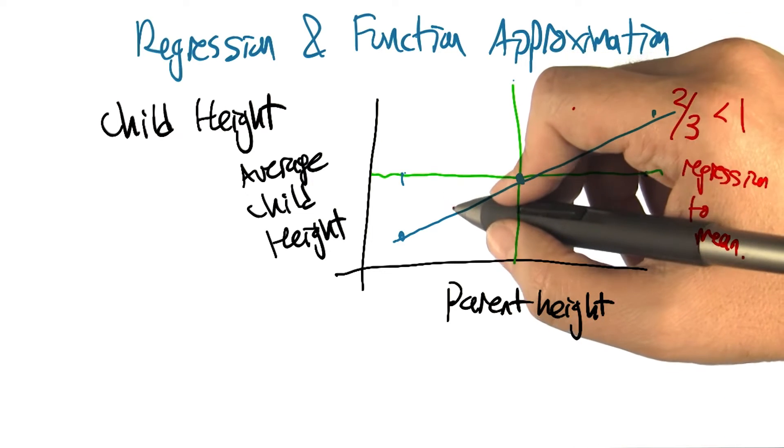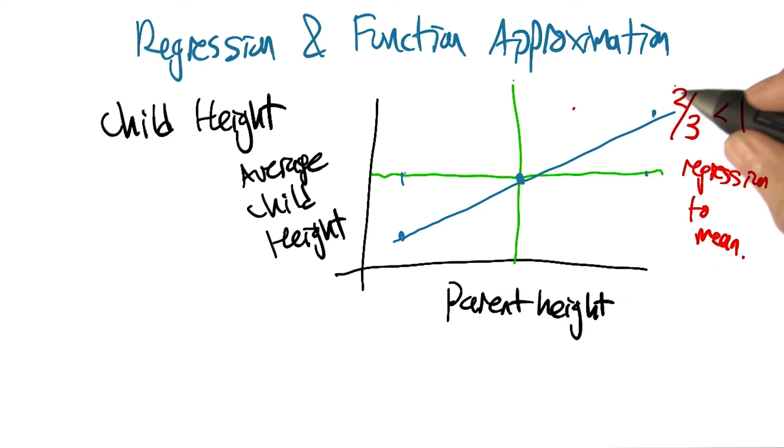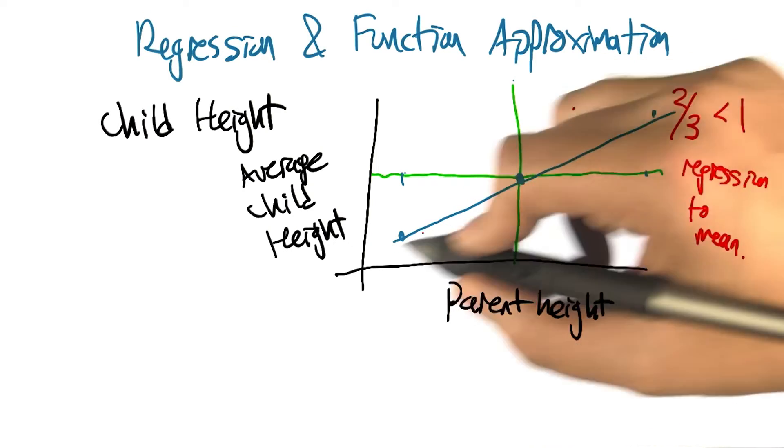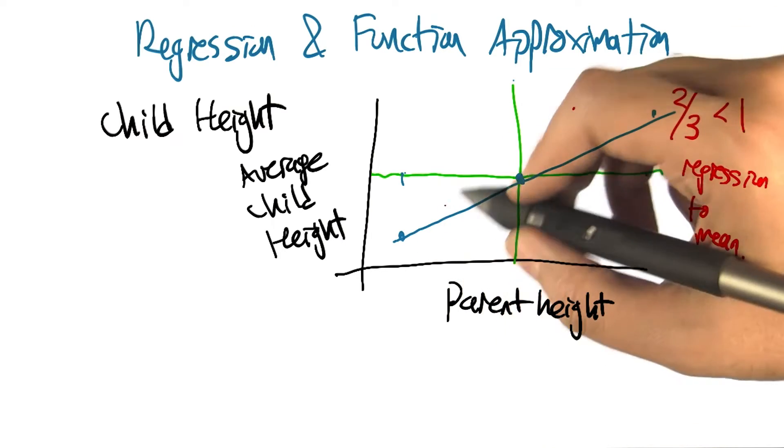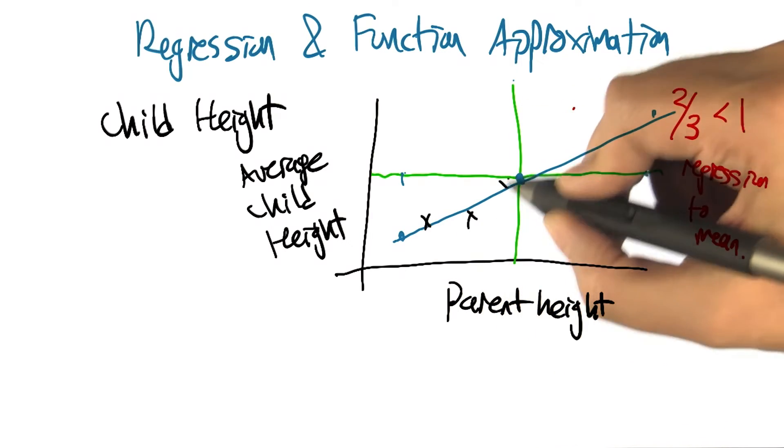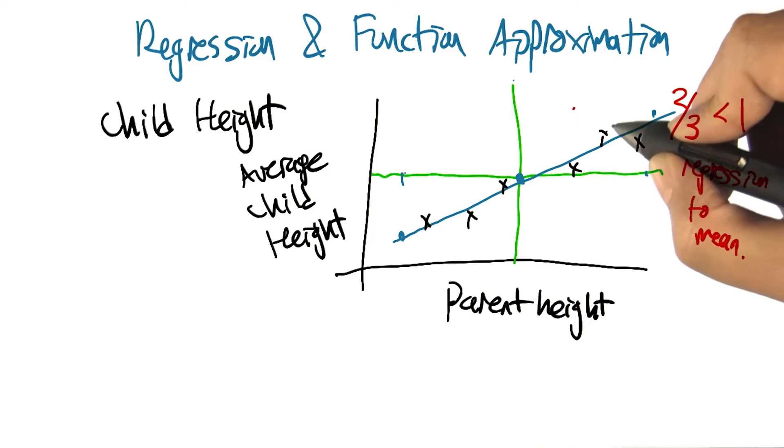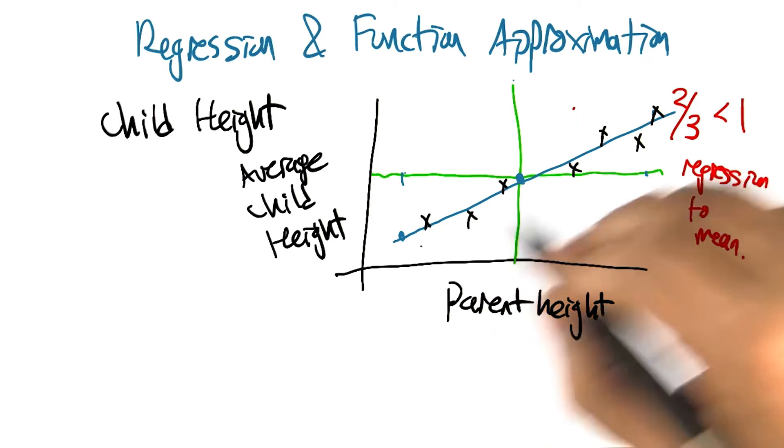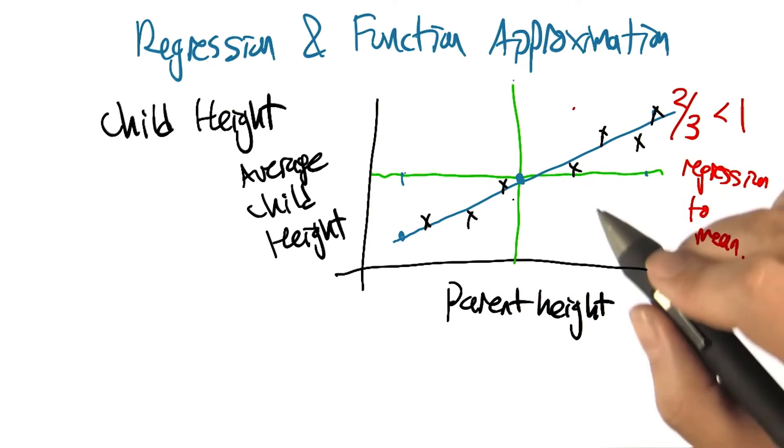And what they started to mean actually was this, not this idea of regression to the mean, but this idea of finding a mathematical relationship based on a bunch of measurements of points. So this term ended up getting misused, but that's the term that we have now. So regression now refers to not this idea of collapsing back towards the mean, but the idea of using a functional form to approximate a bunch of data points. Isn't that weird? That's pretty cool.